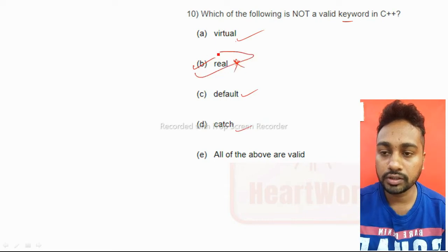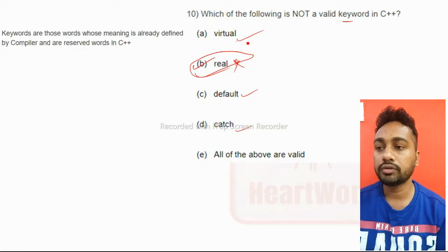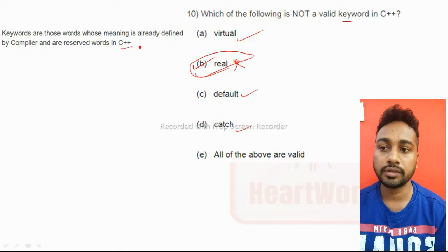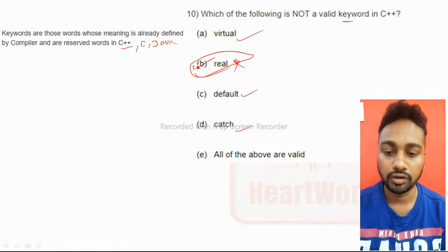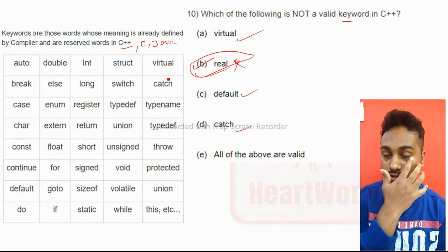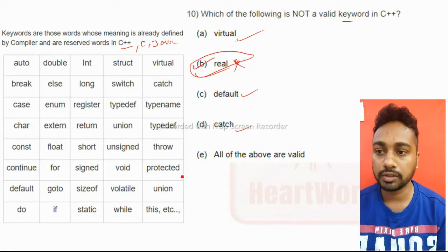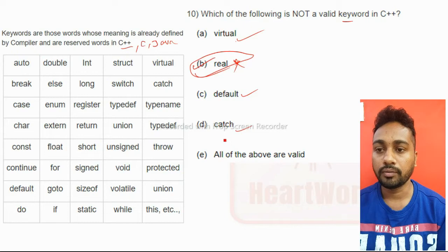Keyword means what? Keywords are those words whose meaning is already defined by compiler and are reserved in C++, C, or Java. Keyword definition is the same for all. Here, what more keywords are there related to C++? You just go through that, you have to remember all these. Questions may come from any of that.